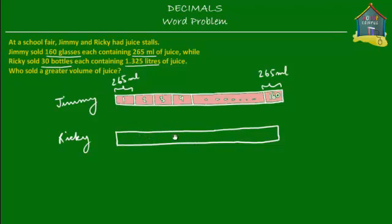This block represents the volume of juice that Ricky sold. We can break this block into smaller blocks, where each smaller block equals 1 bottle. Ricky sold 30 bottles, so let's label these smaller blocks: bottle 1, bottle 2, bottle 3, and so on up to bottle number 30. Each bottle contained 1.325 liters of juice, and there were 30 bottles altogether.